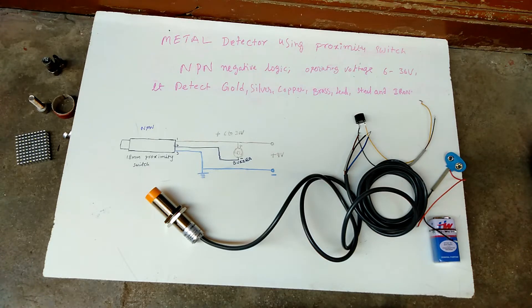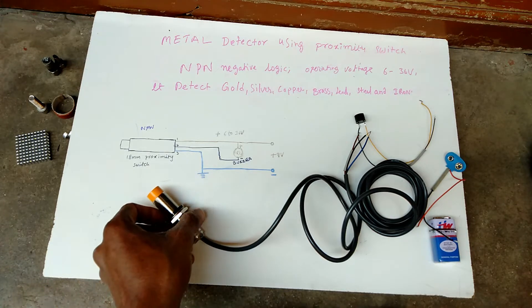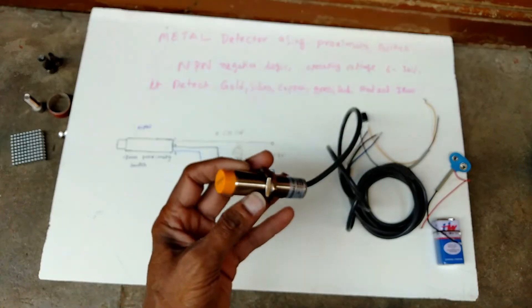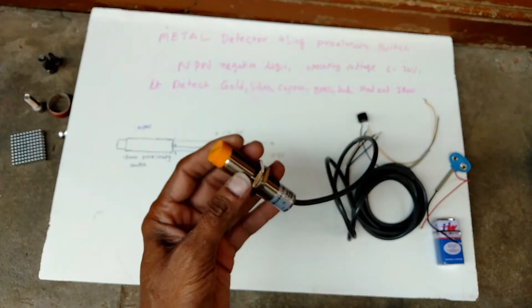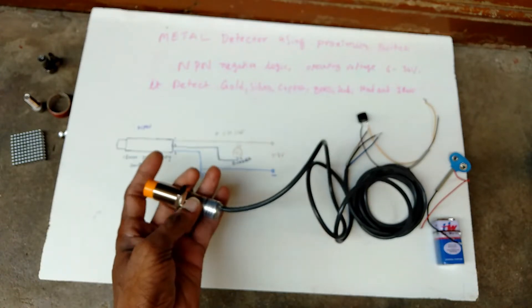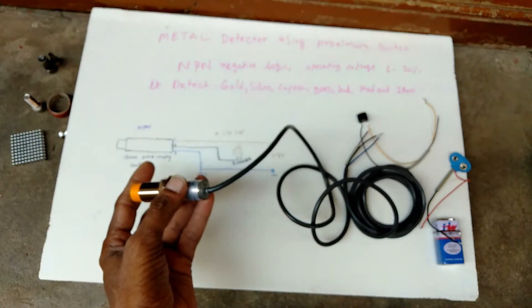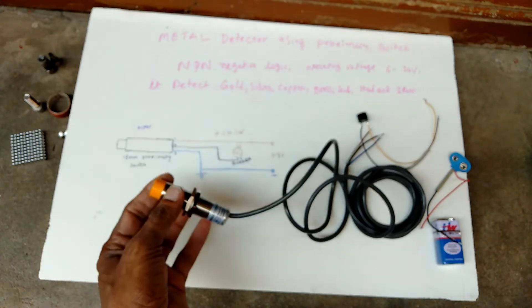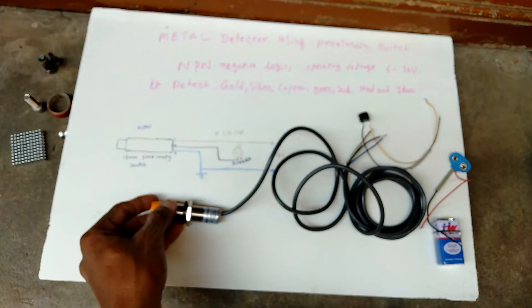I am showing how to convert this proximity switch into metal detector. This one, this proximity switch 18mm and NPN negative logic, NO type proximity switch.